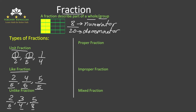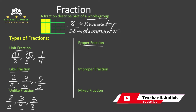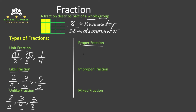The fourth type of fraction is proper fraction. A proper fraction is a fraction in which the numerator is less than the denominator. For example, the fraction 3 sixths — we see that the numerator is less than the denominator. Or the fraction 7 tenths: 7, which is the numerator, is less than 10, which is the denominator. So these two fractions are called proper fractions.